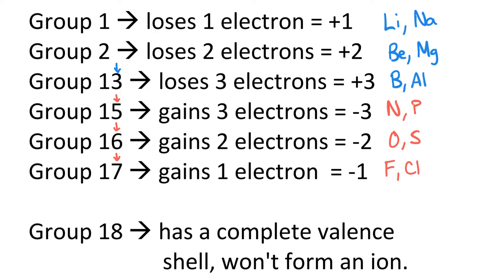Group 18 have a complete valence shell. They won't form ions. An example of that could be neon where it has all electron pairs or all orbitals have an electron pair, so eight electrons complete valence shell.